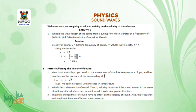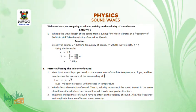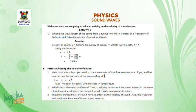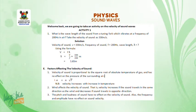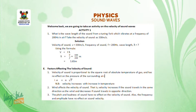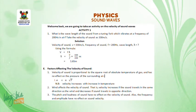Activity 1. What is the wavelength of the sound from a tuning fork which vibrates at a frequency of 200 hertz in air? Take the velocity of sound as 330 meters per second. Solution: velocity of sound V = 330 m/s, frequency F = 200 Hz, wavelength is unknown. Using the formula V = Fλ, or λ = V/F, we substitute 330 for V and 200 for F. When we simplify that, the wavelength is equal to 1.65 meters.